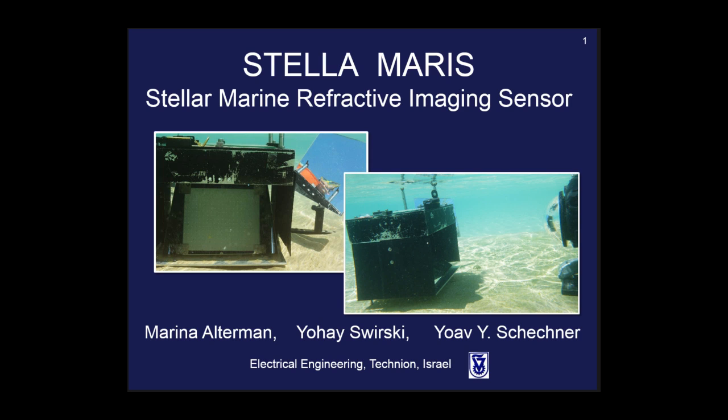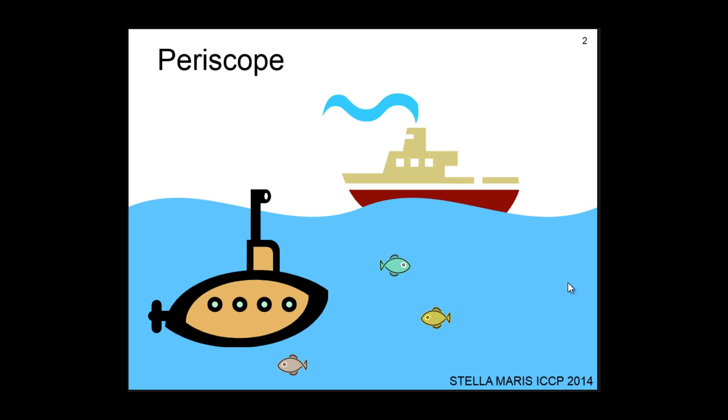We now present the STELLA MARIS system, which is an acronym of STELLAR Marine Refractive Imaging Sensor. When a submarine needs to look outside the water, it uses a periscope.